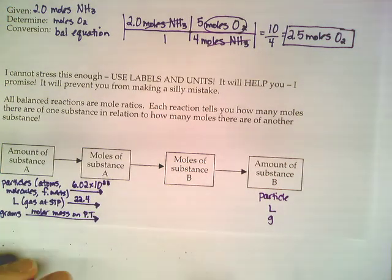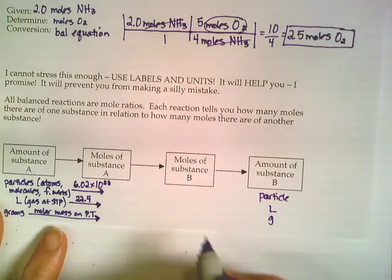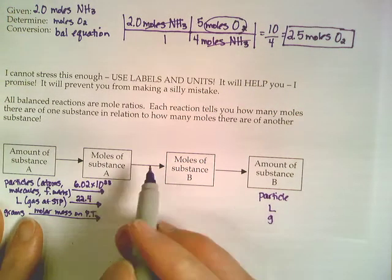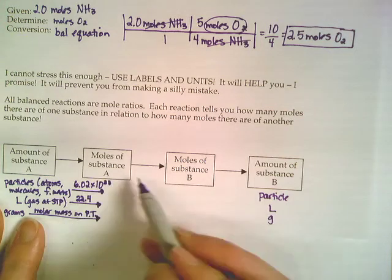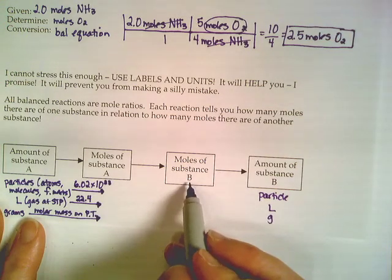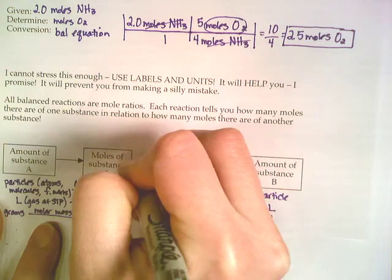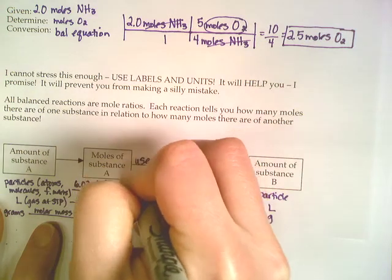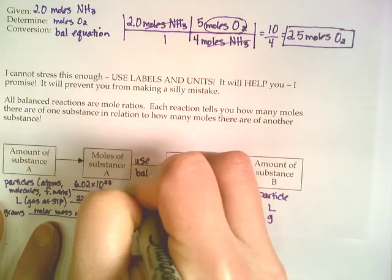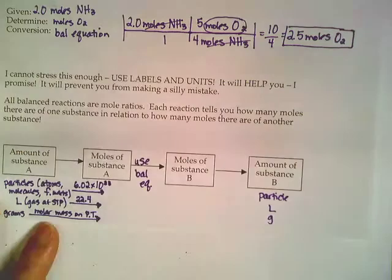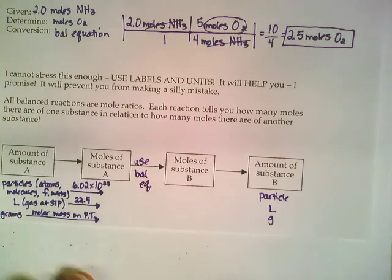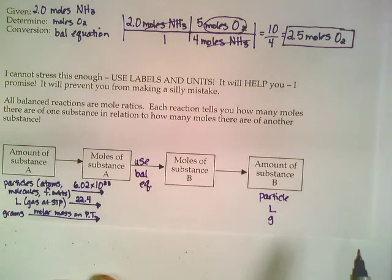The only new piece for a stoichiometry problem is this arrow in the middle to get from moles of one chemical to moles of another chemical. And to do that, that's where you're going to use the mole ratios in your balanced equation as one more conversion factor to get you from one chemical to another.